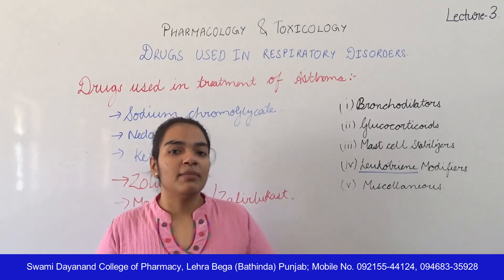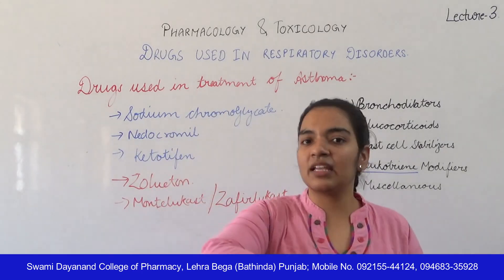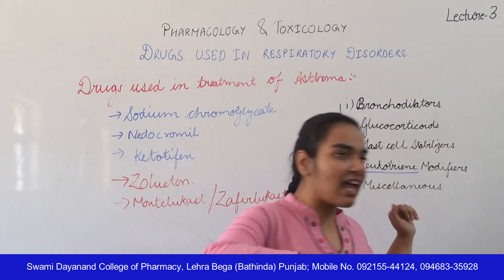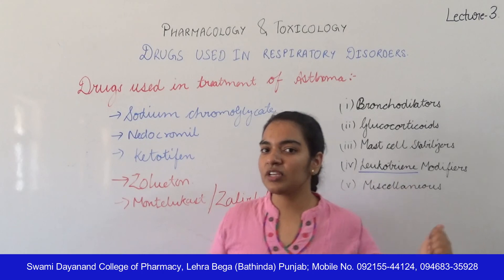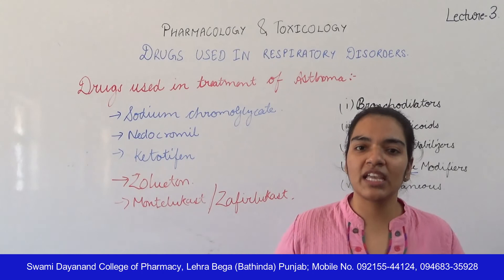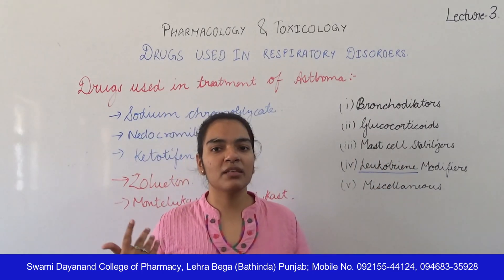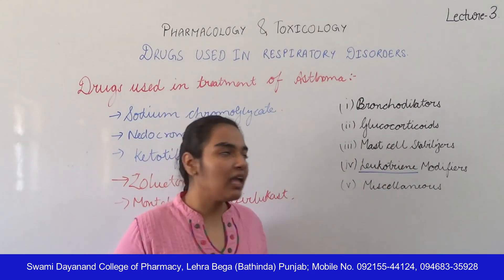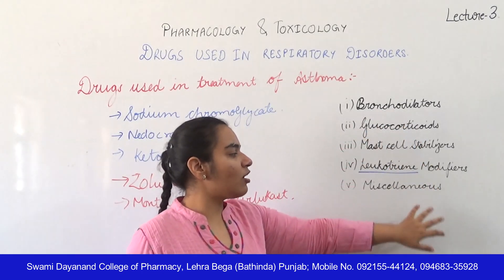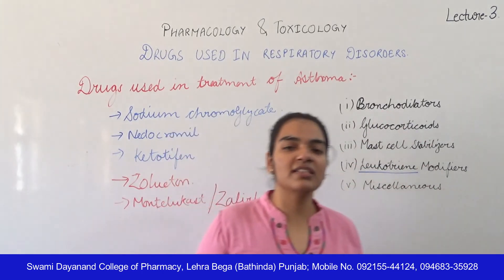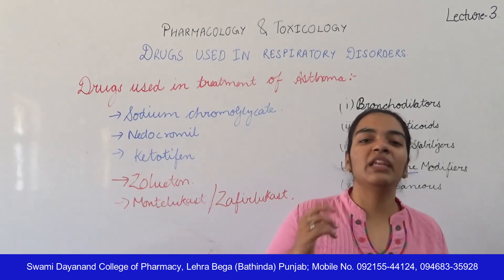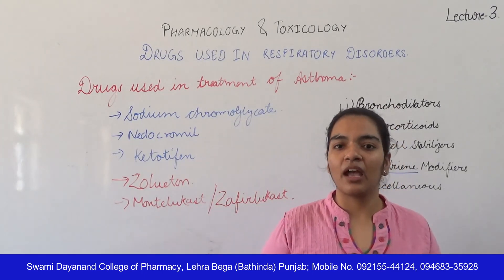So this was the treatment of asthma. In the treatment of asthma, we covered five major classes: bronchodilators, glucocorticoids, mast cell stabilizers, leukotriene modifiers, and antihistamines. Depending on which type of asthma the patient has, the appropriate agents are selected. In the next section, we will talk about nasal decongestants. Thank you.